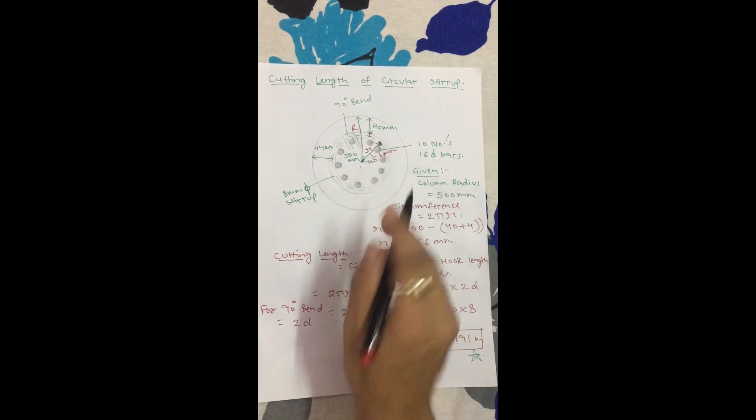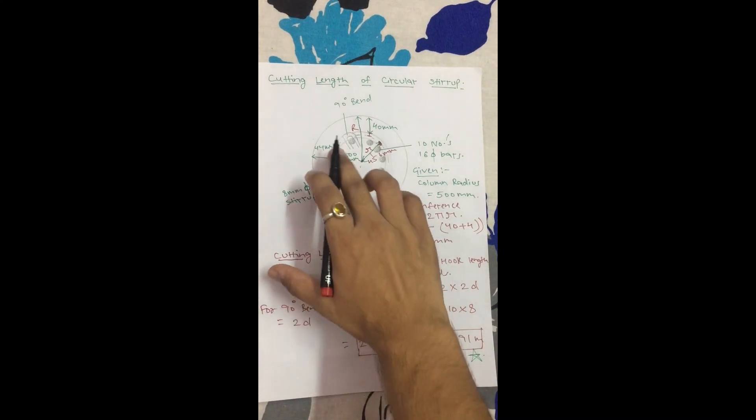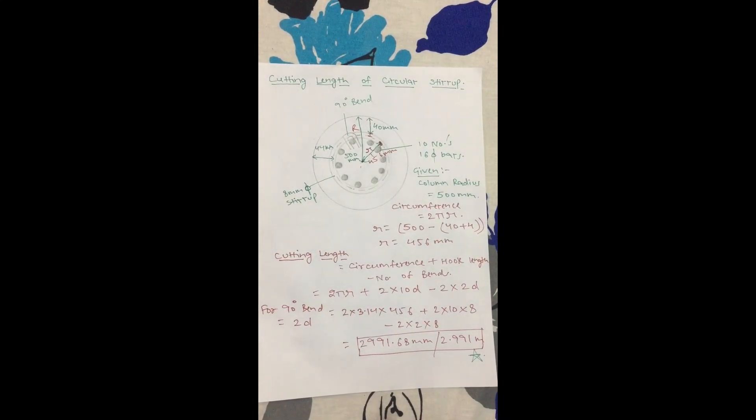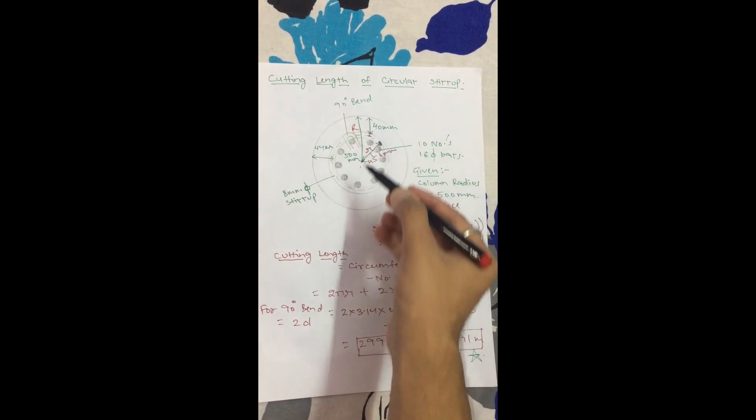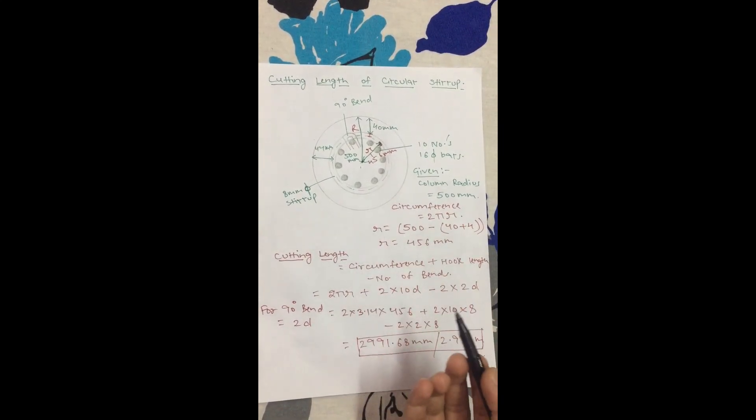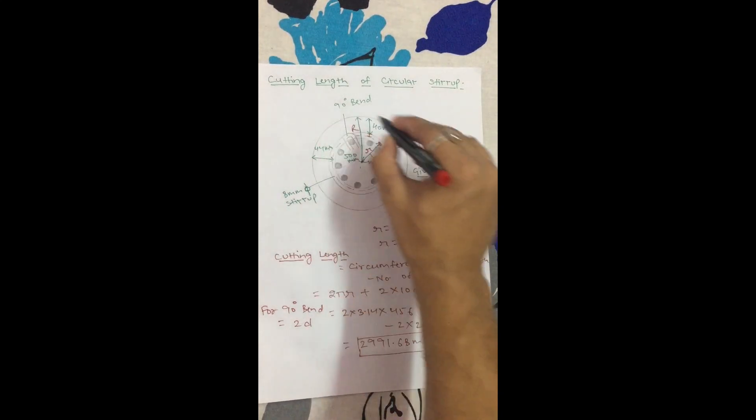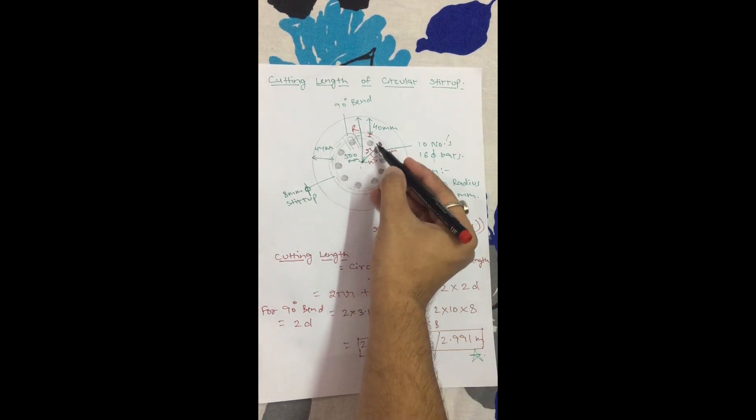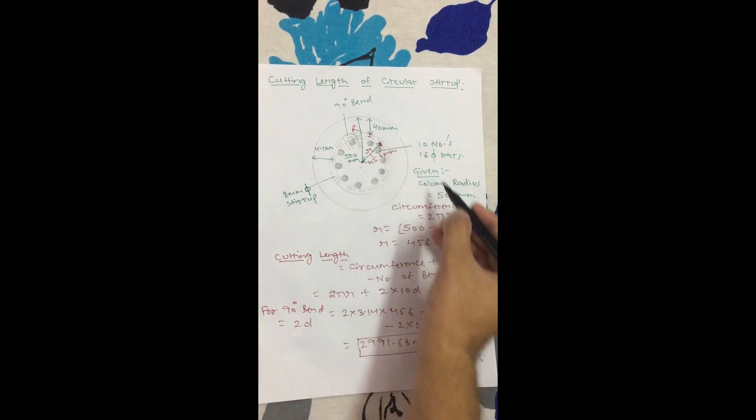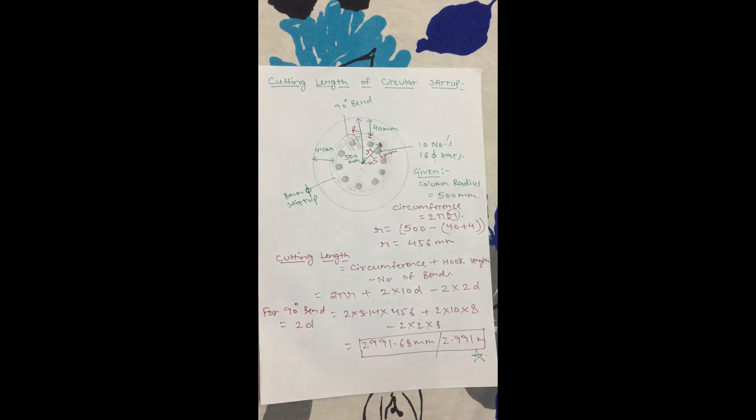We need to take out this distance so we can find the radius. Some people have doubt about whether to add or subtract the 40mm. We need to calculate the circumference, so we need the outer surface measurement. We can easily put the radius value in the formula.